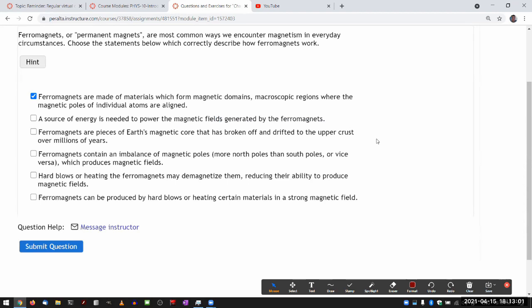Ferromagnets are pieces of Earth's magnetic core. Yeah, I can see that I'm making stuff up here. So this is not correct. But for what it's worth, if you've studied geology, Earth's core consists of liquid outer core and solid inner core, and they are actually made up of ferromagnetic elements, iron and nickel, but they don't break off, especially the outer core, which is liquid anyway. So I'm just making stuff up here.